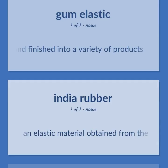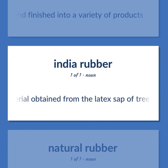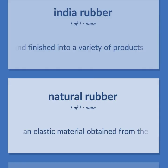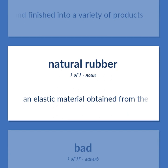An elastic material obtained from the latex sap of trees, especially trees of the genera Hevea and Ficus, that can be vulcanized and finished into a variety of products.